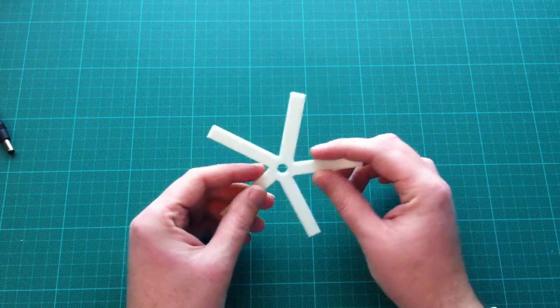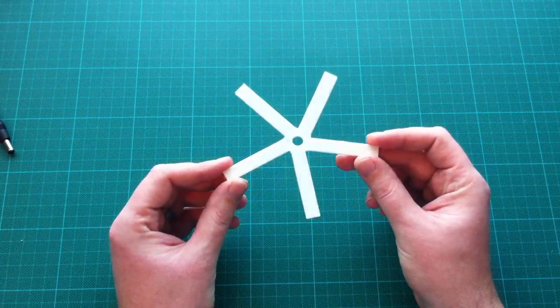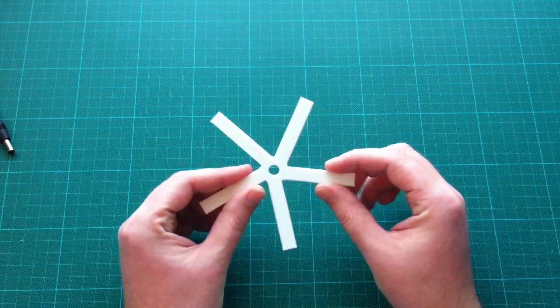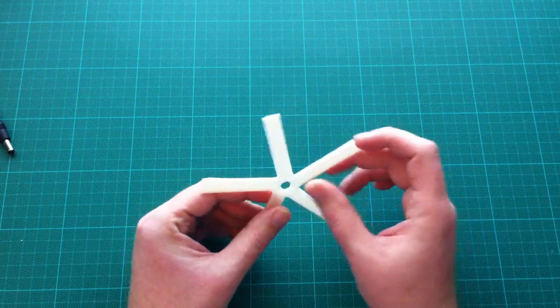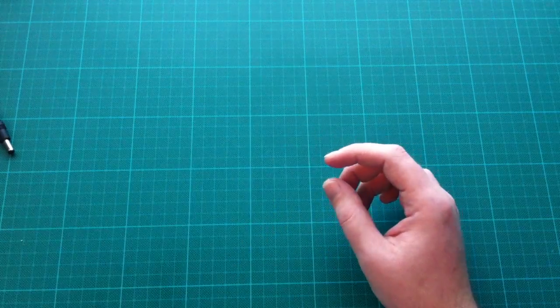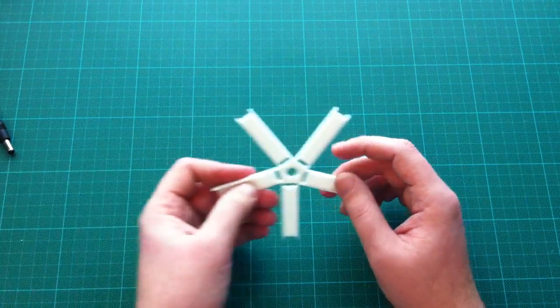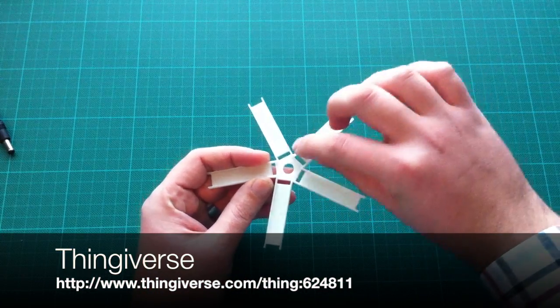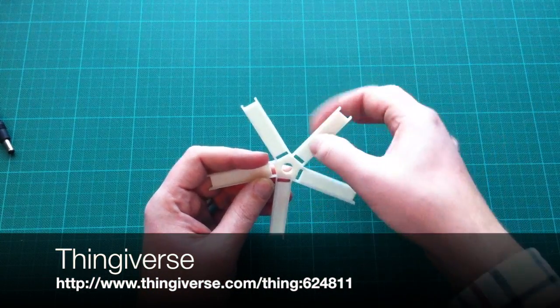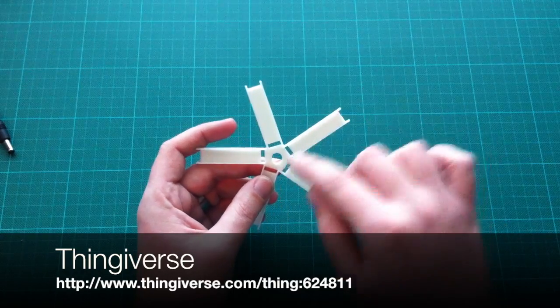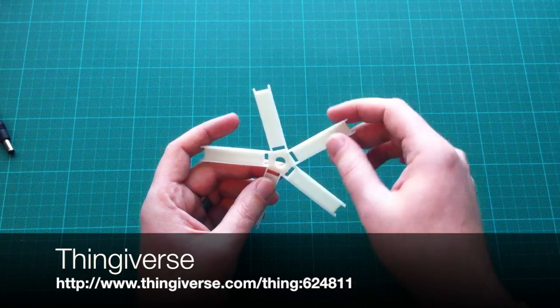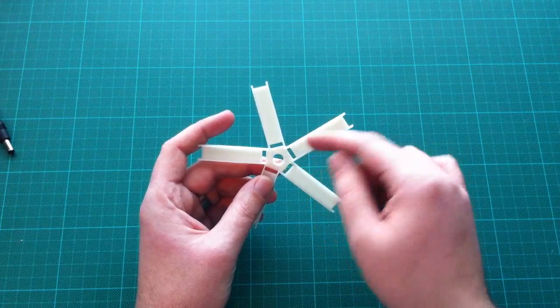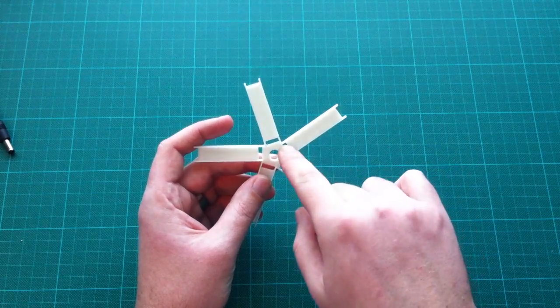Based on the measurements of the stick, I came up with this shape. After printing this and making sure it fitted and the dimensions were correct, I created a second version in which I had bigger slots to fit or clip the sticks in, and some spacings to be able to pass through some wires for the contacts.